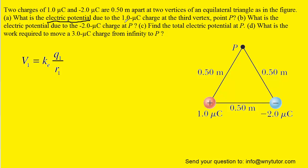they're asking the electric potential produced by the one microcoulomb charge. So we're going to use a distance from that one microcoulomb charge to point P, which is labeled as 0.5 meters.